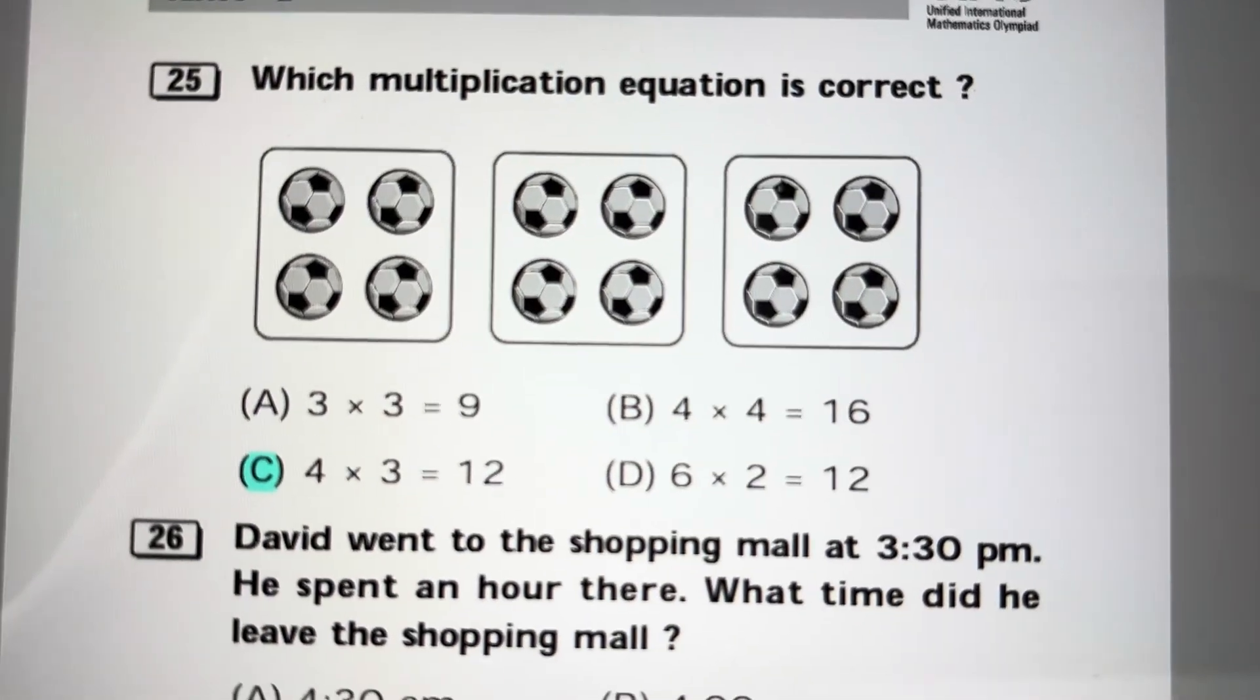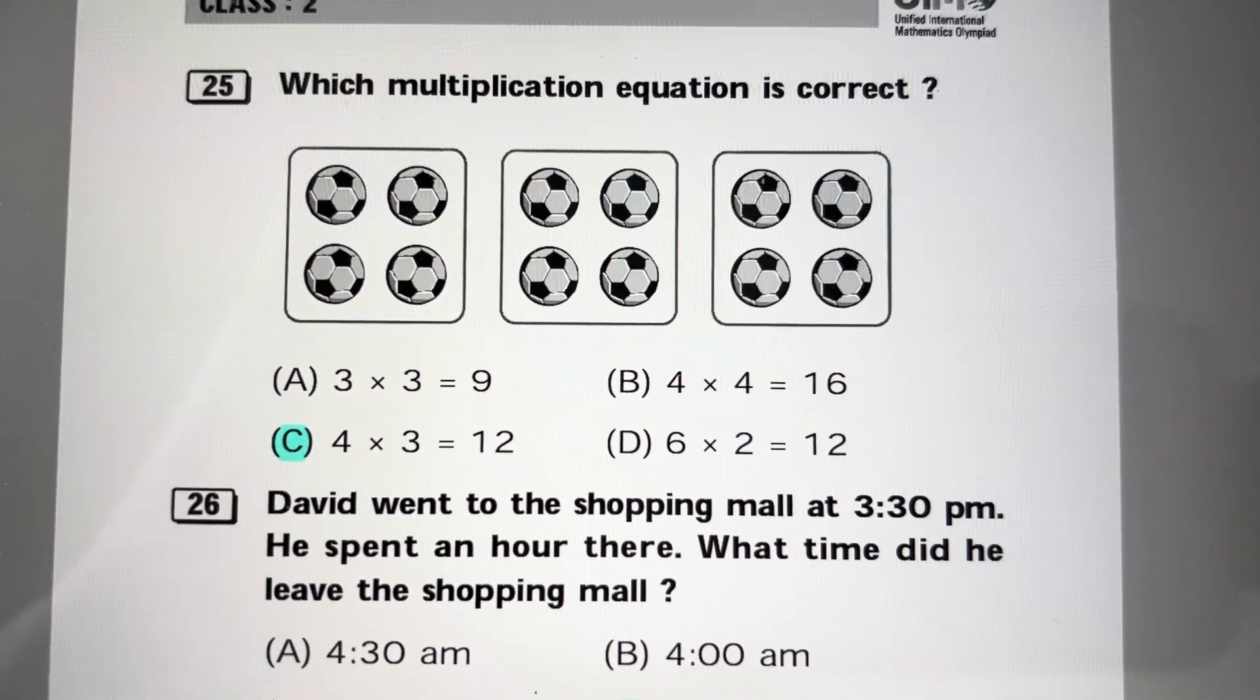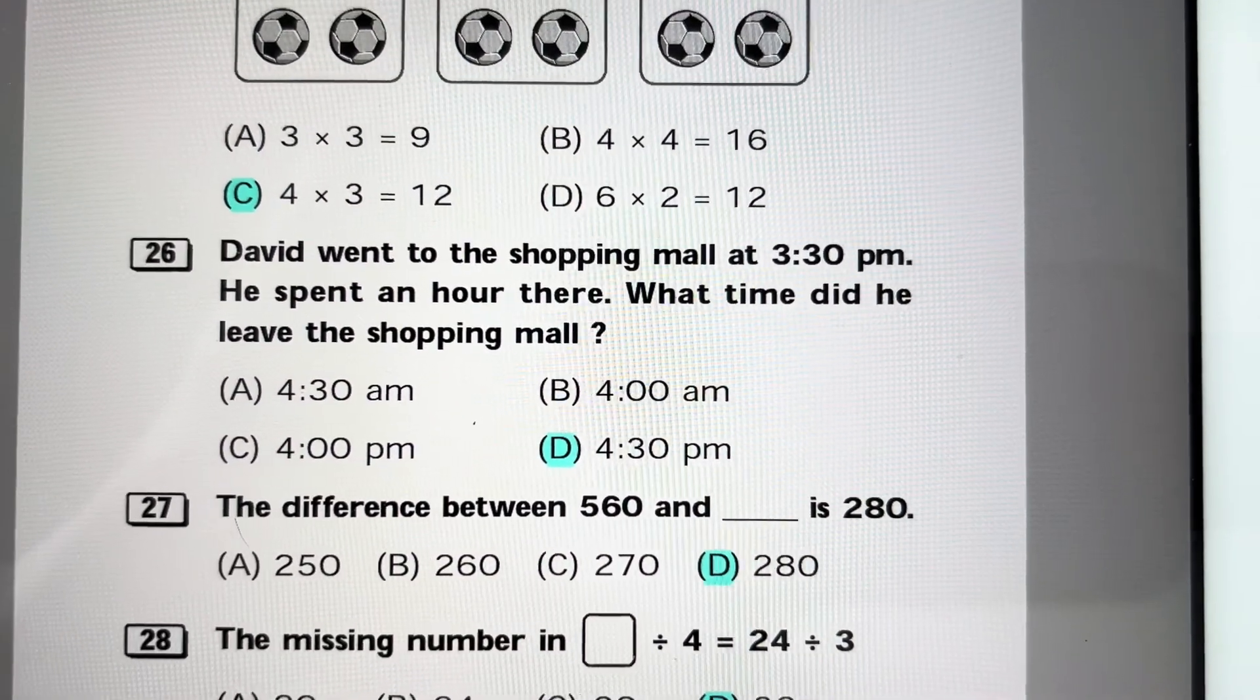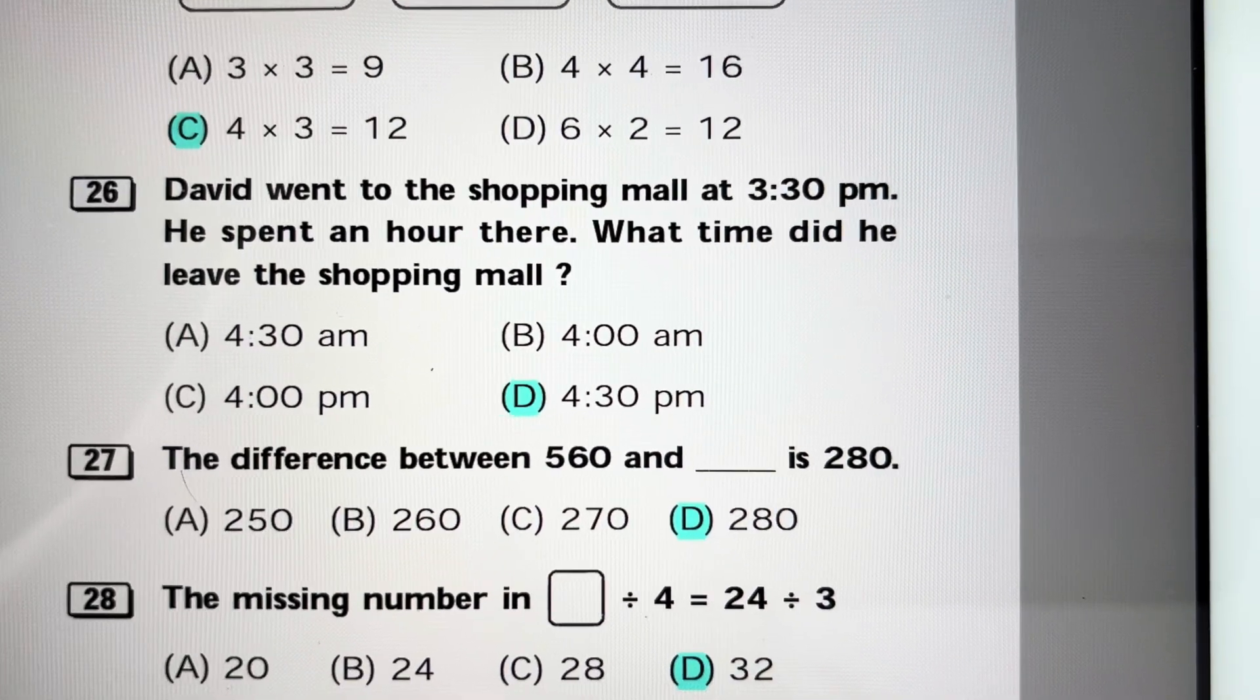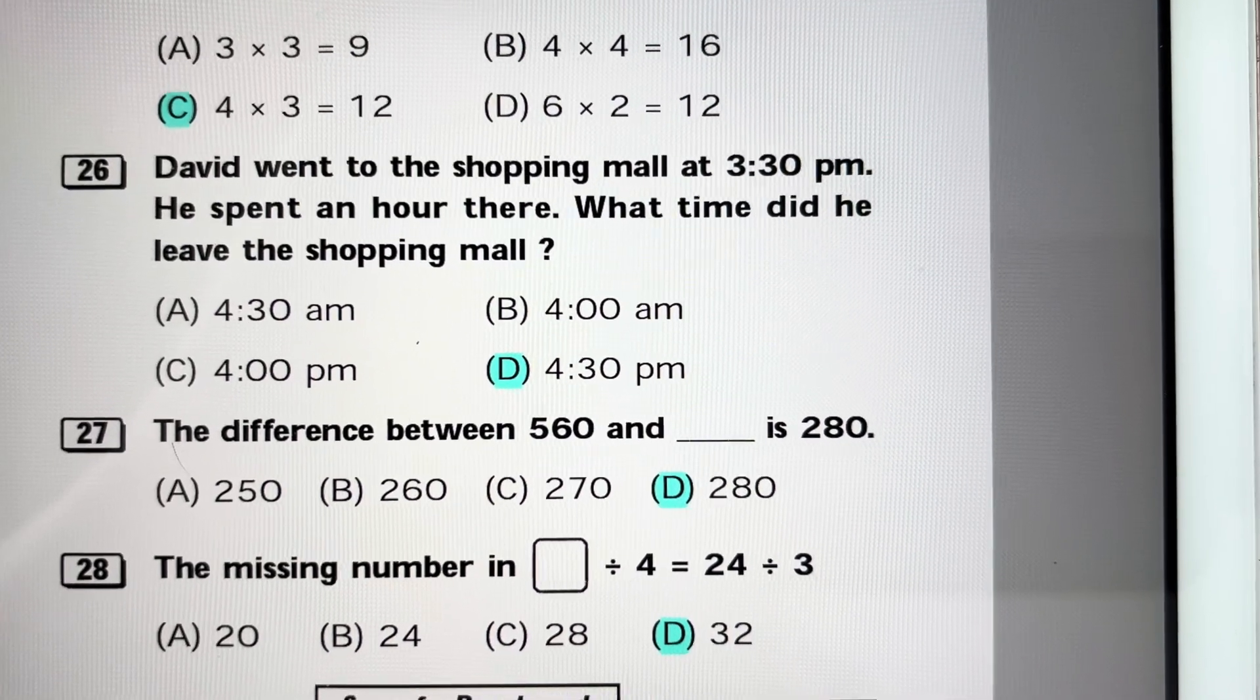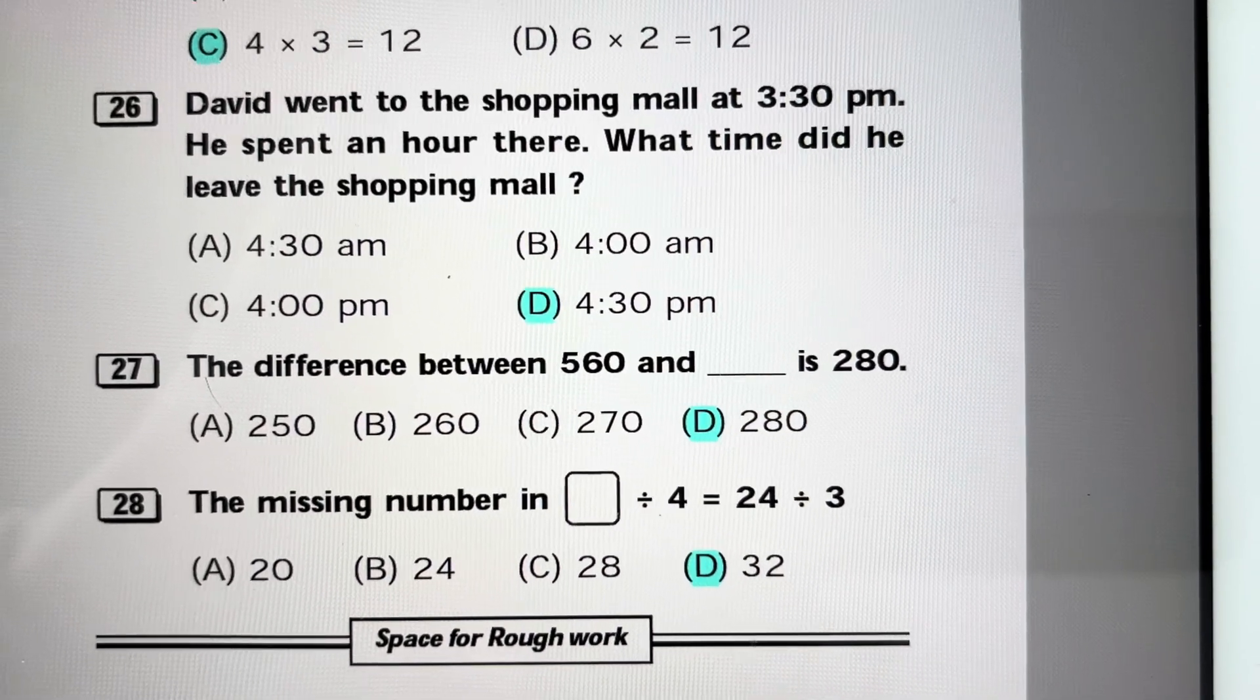Which multiplication equation is correct? There are 4 balls in each group and there are 3 groups, so the answer is 4 threes are 12. Answer is C. Question 26: David went to the shopping mall at 3:30 pm. He spent an hour there. What time did he leave the shopping mall? He left the shopping mall at 4:30 pm. Don't make the mistake, it is not am, it is pm. Answer is D.